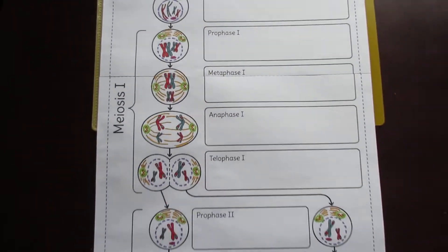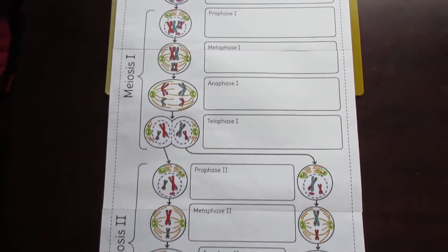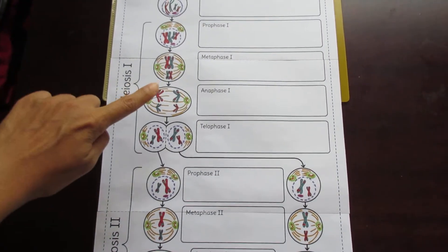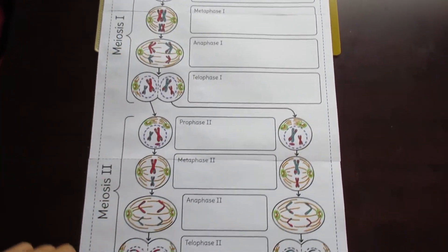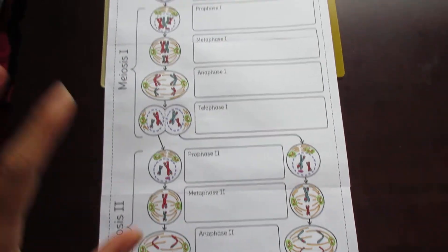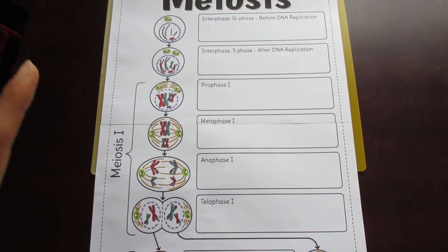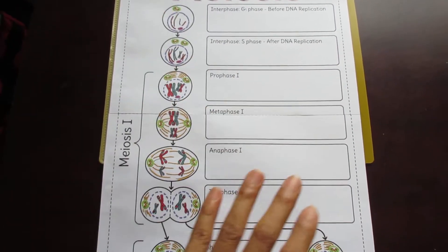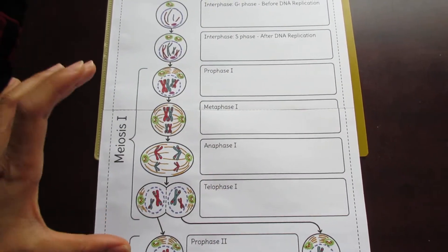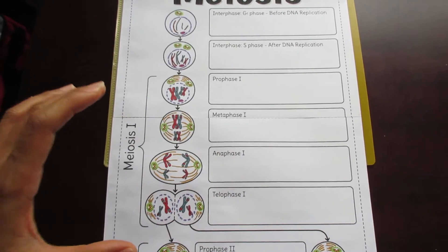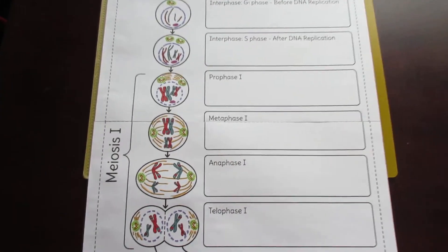I've divided the rest of the foldable into Meiosis I and Meiosis II, which really allows students to separate the two main stages of meiosis in their minds.